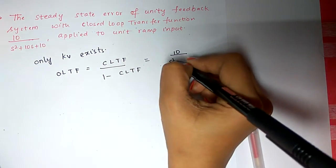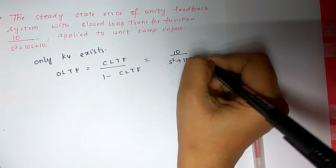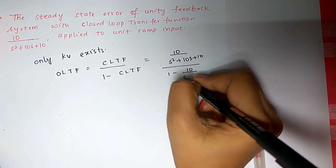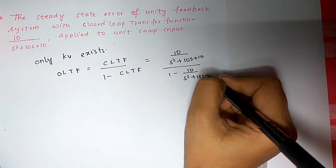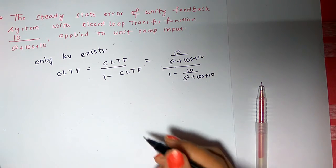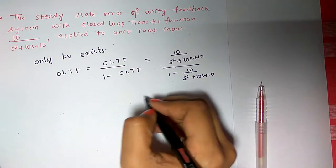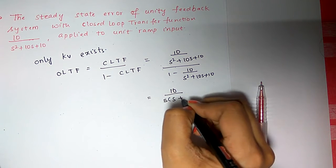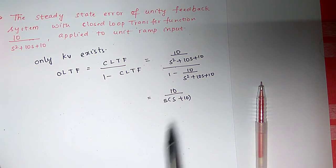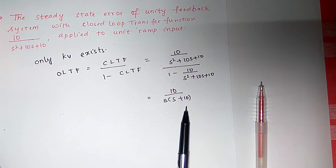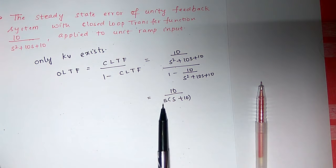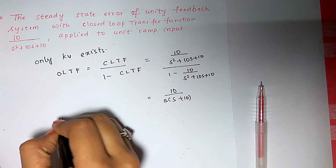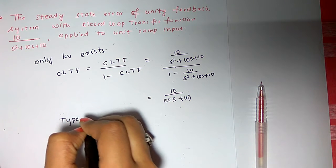Substituting: 10/(s²+10s+10) divided by 1 minus 10/(s²+10s+10), which simplifies to 10 divided by s(s+10). You can see from here there is one pole at the origin, so the given system is a type 1 system.